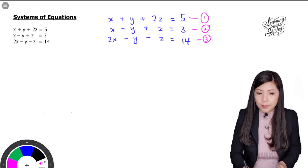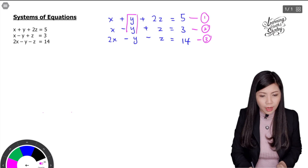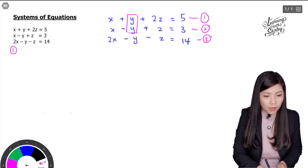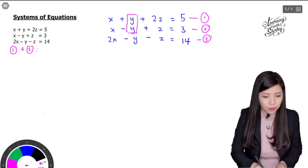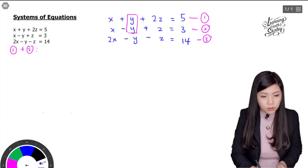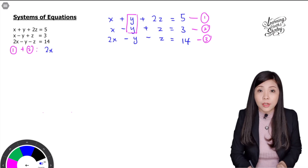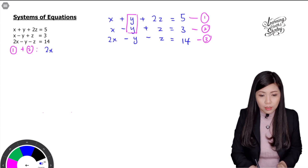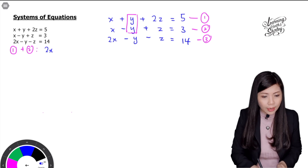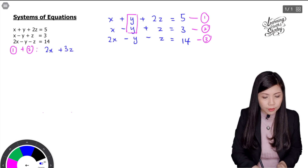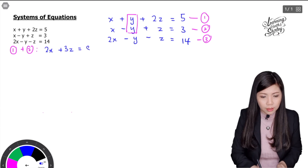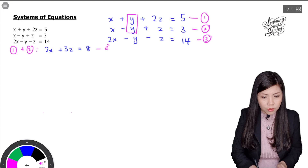We can eliminate y by adding equations together because y and negative y become 0. So equation 1 plus equation 2: x plus x is 2x, positive y plus negative y gives 0 so y is eliminated, 2z plus z is 3z, and 5 plus 3 equals 8. So this gives us 2x plus 3z equals 8, and this is equation 4.